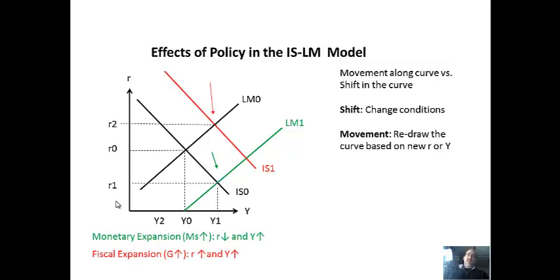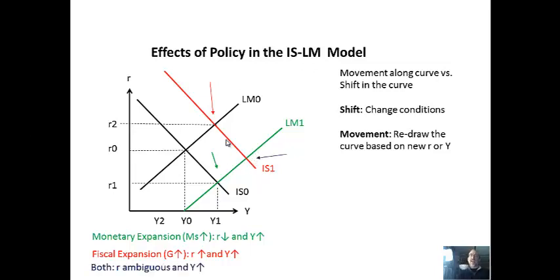What about fiscal expansion? If the government spends more, the end result is higher interest rates and higher GDP. The tax cut of 2017 likely led to higher rates as well as higher GDP. The money market doesn't shift, but as the government spends more, there's higher demand for money due to higher GDP, and you move along the LM curve. You could also have two changes in conditions simultaneously — a simultaneous fiscal and monetary expansion. The up and down movements in interest rates cancel out, but it's two increases in GDP, so it's clearly an increase in GDP. However, the interest rate effect is ambiguous — one could dominate the other, so you can't say if the net effect on rates is zero, a little increase, or a little decrease.